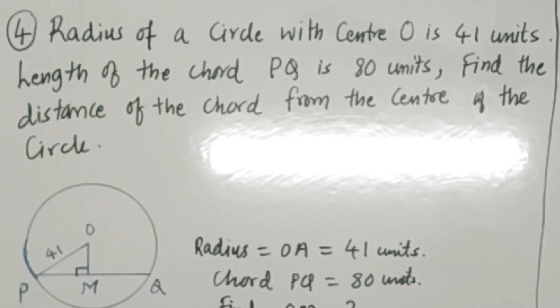Fourth example: the radius of the circle is 41 units and the length of chord PQ is 80 units. Find the distance of the chord from the center of the circle.